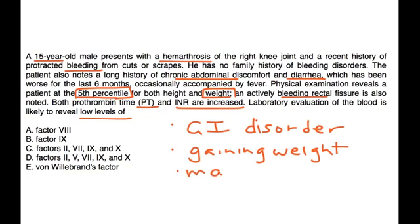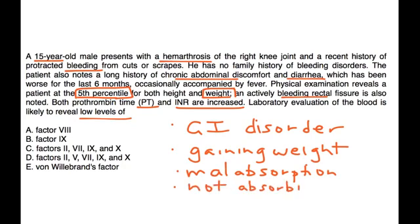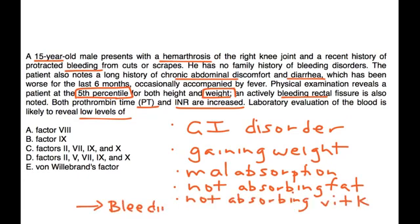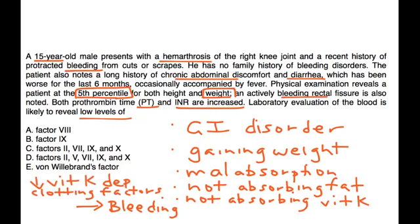Most likely he has some sort of malabsorption problem — he's not absorbing the vitamins that he should. That's why he has diarrhea and low weight. In particular, he's probably not absorbing fat, and when you don't absorb fat, you are also unable to absorb vitamin K. That is the reason he is bleeding: when you don't have vitamin K, you are unable to produce those vitamin K-dependent clotting factors — factors 2, 7, 9, and 10. That would be choice C.